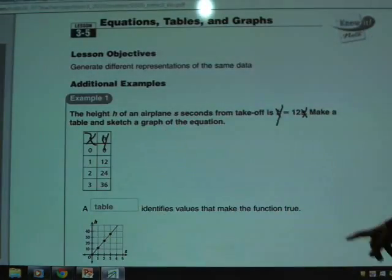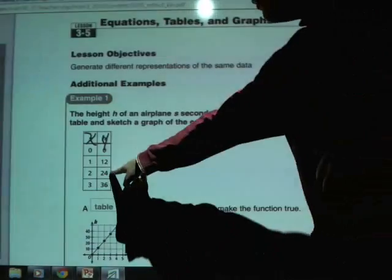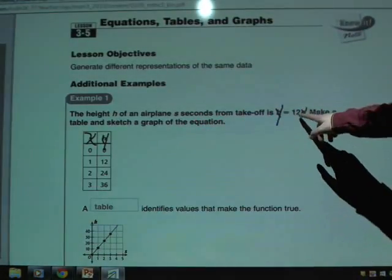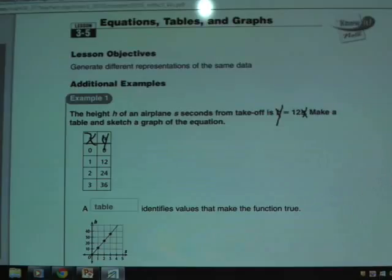When I have 2 for x, 12 times 2 is 24. And when I have 3 for x, I get 12 times 3, which is 36. And now it's a matter of me going down and graphing that on my graph here.